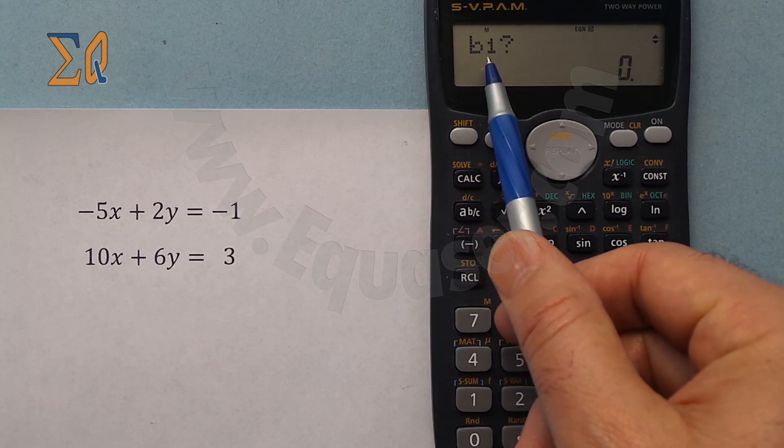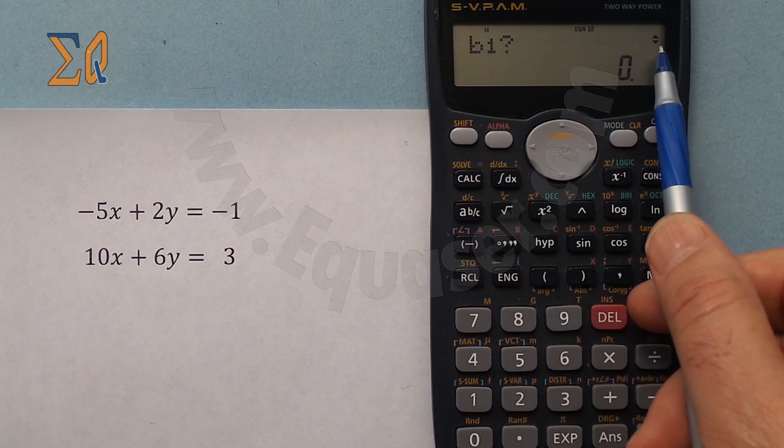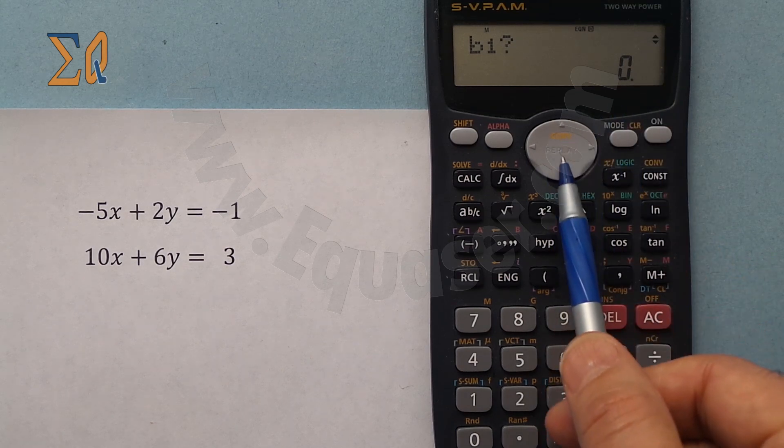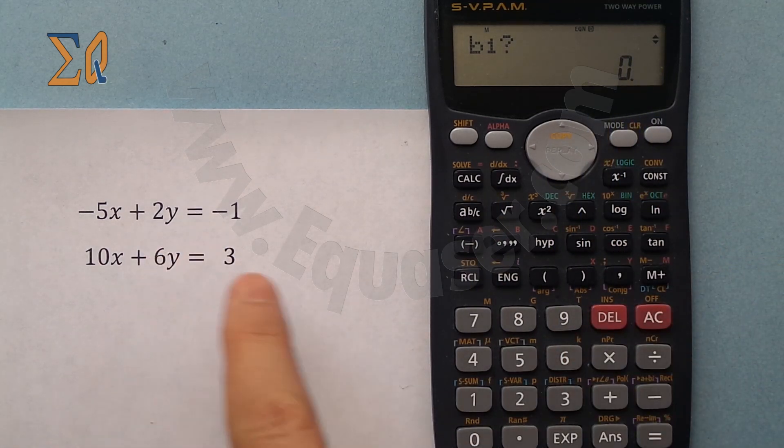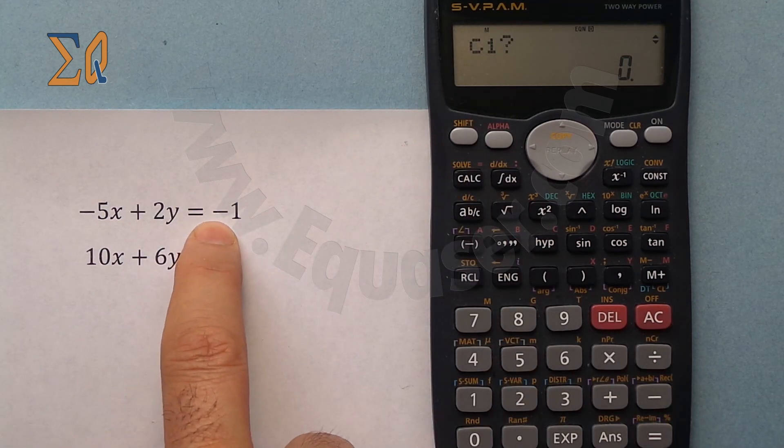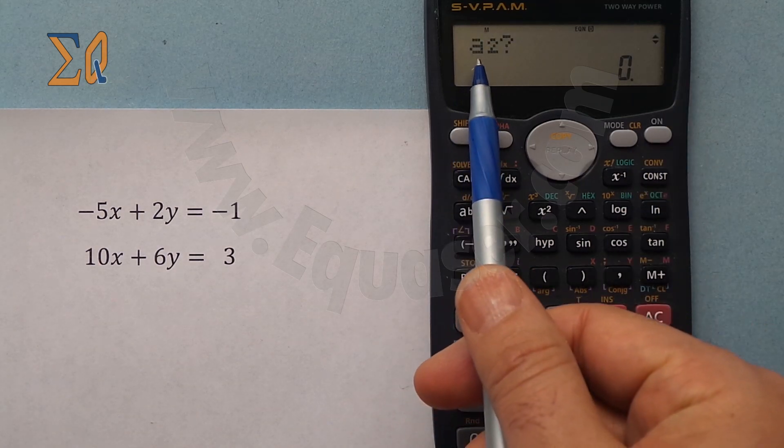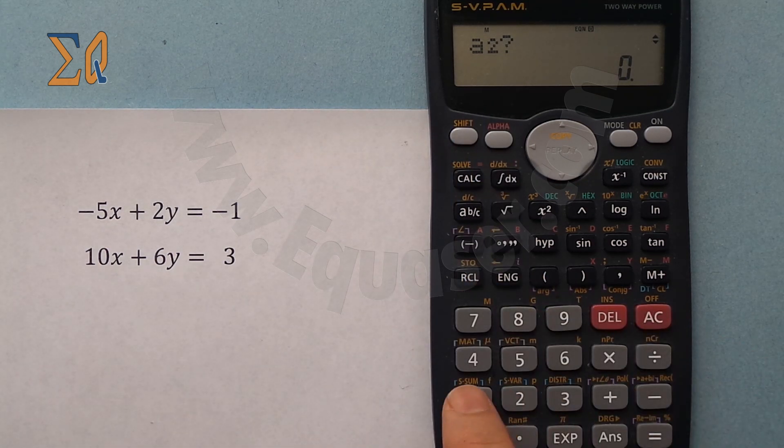And these two also appeared, meaning that you can scroll with this key to go up and change them. So for B, press 2 equal sign, and then for C minus 1, I press equal sign. Automatically it goes to the next value. So a2, which means 10 for the second equation, 10, 6, and then for C, 3.